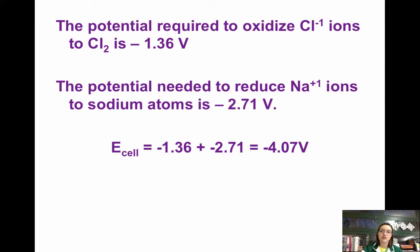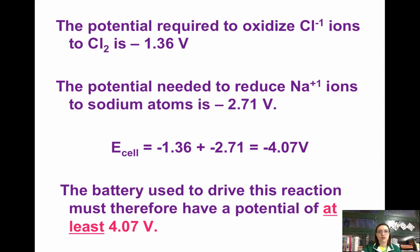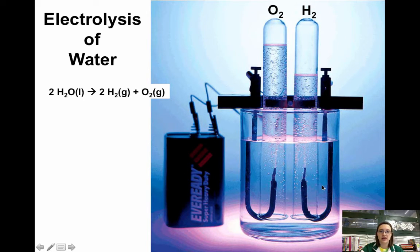This is very non-spontaneous, so the battery used to drive this reaction needs at least 4.07 V. That's why normally we use a 9-volt battery — it has 9 volts of potential it can give, which is usually enough to run an electrolytic cell. Another common example of electrolysis is the electrolysis of water. By connecting electrodes to a 9-volt battery in water, we can collect hydrogen and oxygen gas.